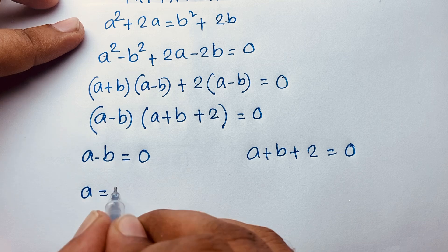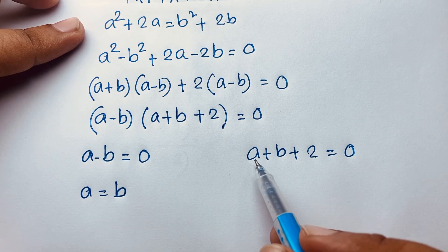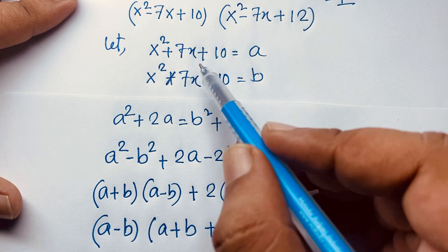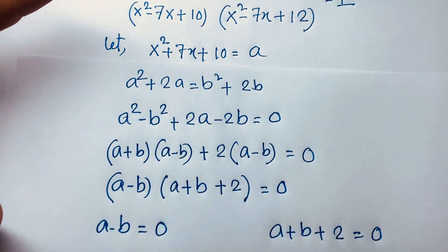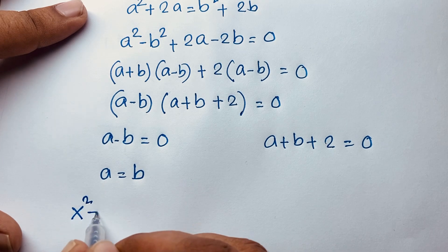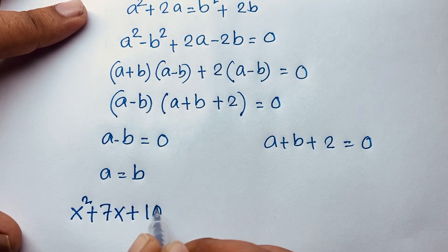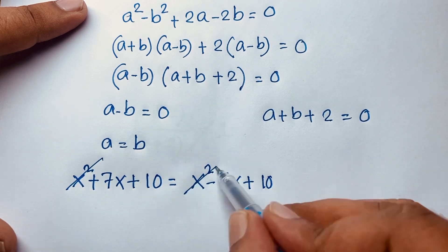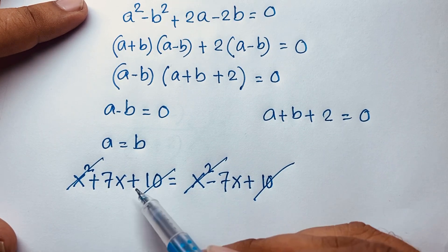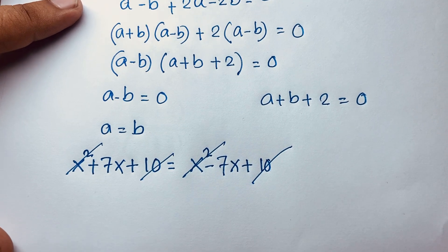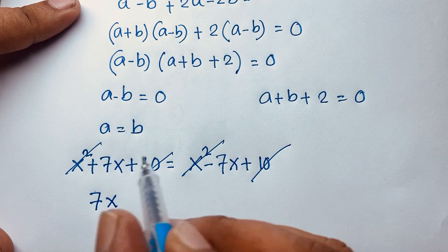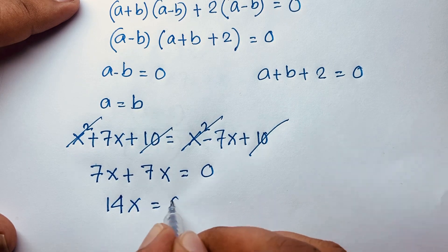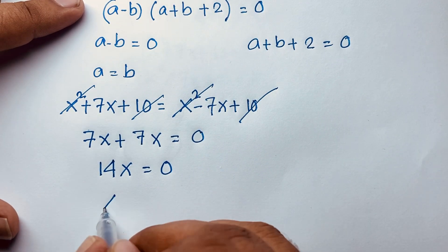For Case 1, a = b. Remember a = x² + 7x + 10 and b = x² - 7x + 10. Setting them equal, x² and +10 cancel out, leaving 7x + 7x = 0, so 14x = 0. Dividing both sides by 14, we get x = 0.